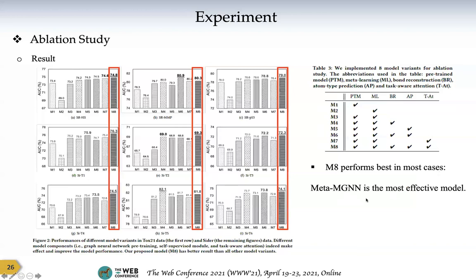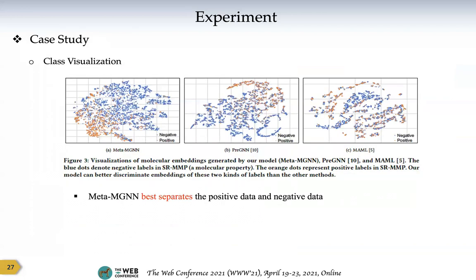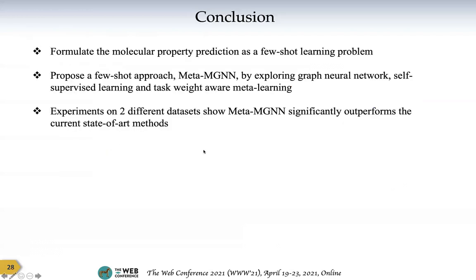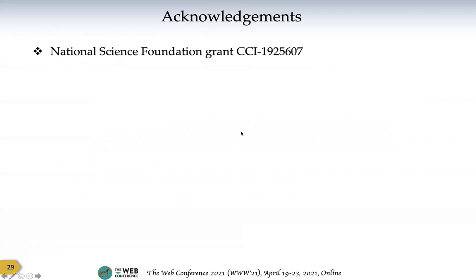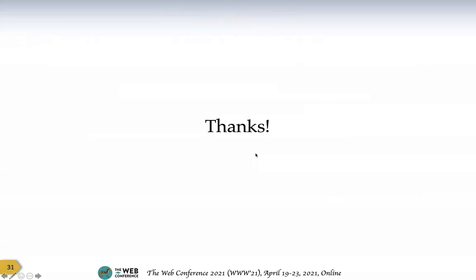To further show the effectiveness of our model, we also visualized the molecular embeddings generated by MetaMGN, GNN, and MAML. Our model best separates the blue dots and orange dots, which represent negative and positive labels. In summary, we formulate molecular property prediction as a few-shot learning problem and propose a few-shot approach MetaMGN by exploring graph neural networks, self-supervised learning, and task-weight-aware meta-learning, with a pre-training strategy. Our model outperforms current state-of-the-art methods on two datasets. Thank you for listening and thanks to the National Science Foundation.